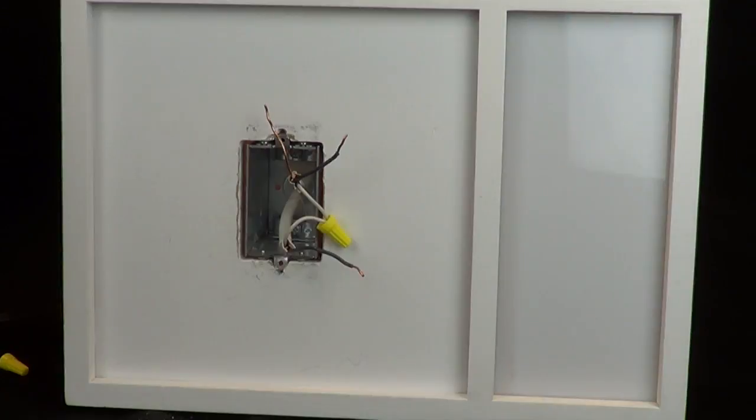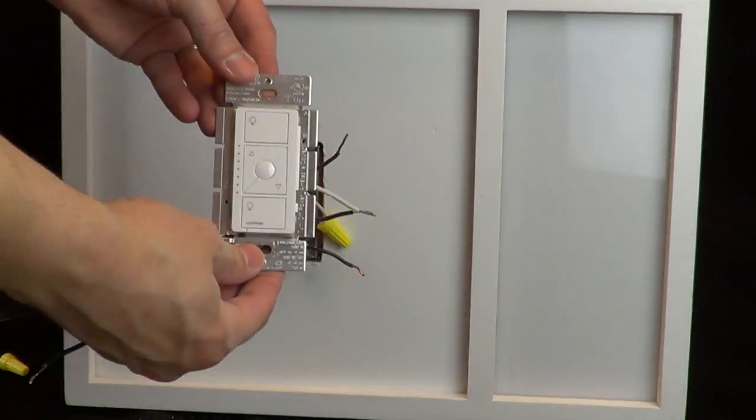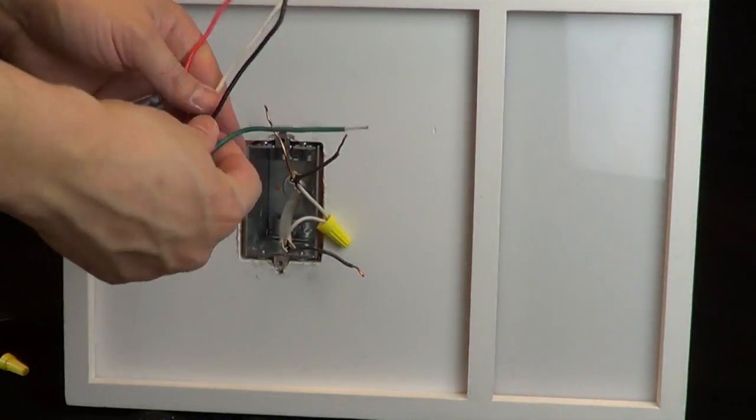In this video, we're using a Caseta dimmer. However, these instructions apply to all other products that have the same color wires.